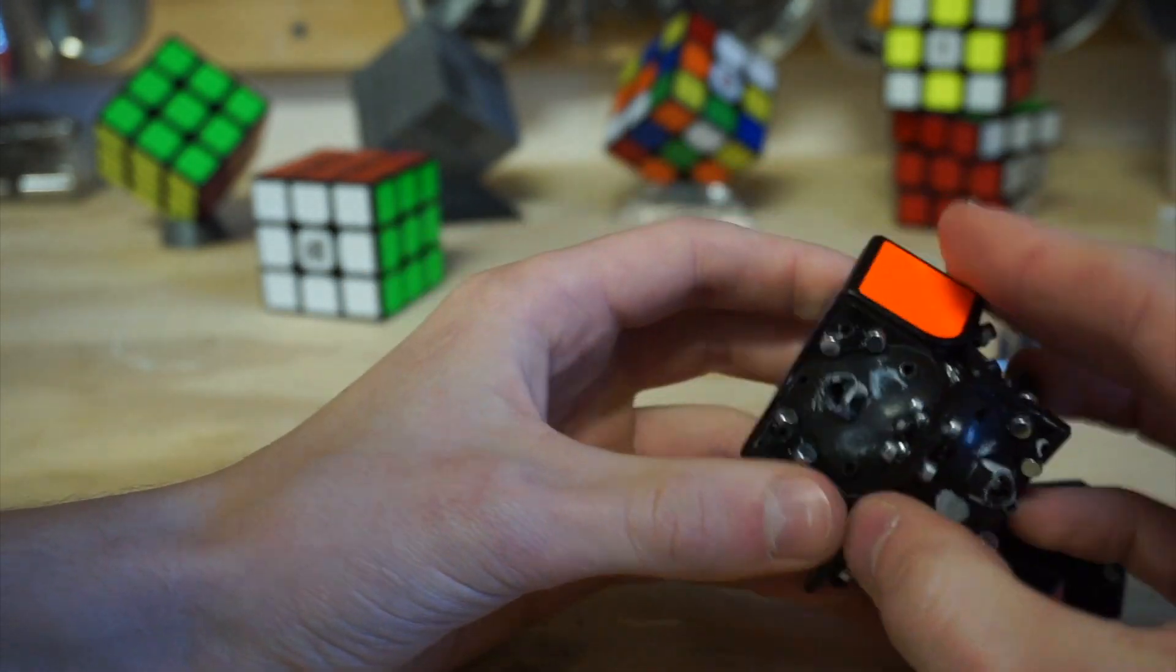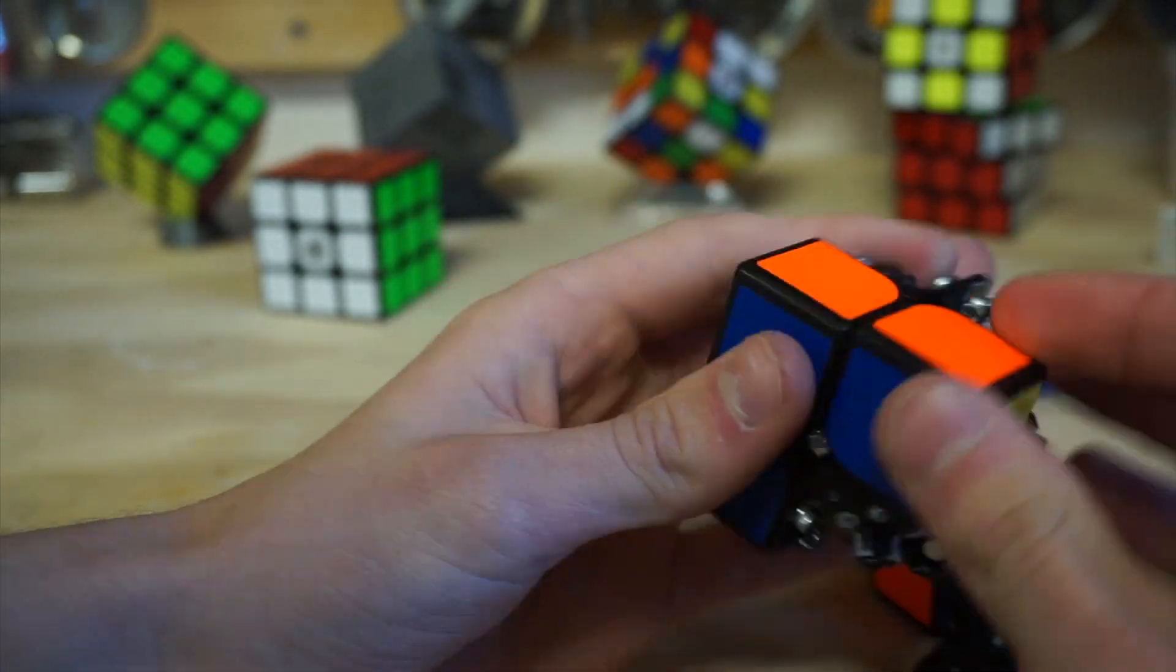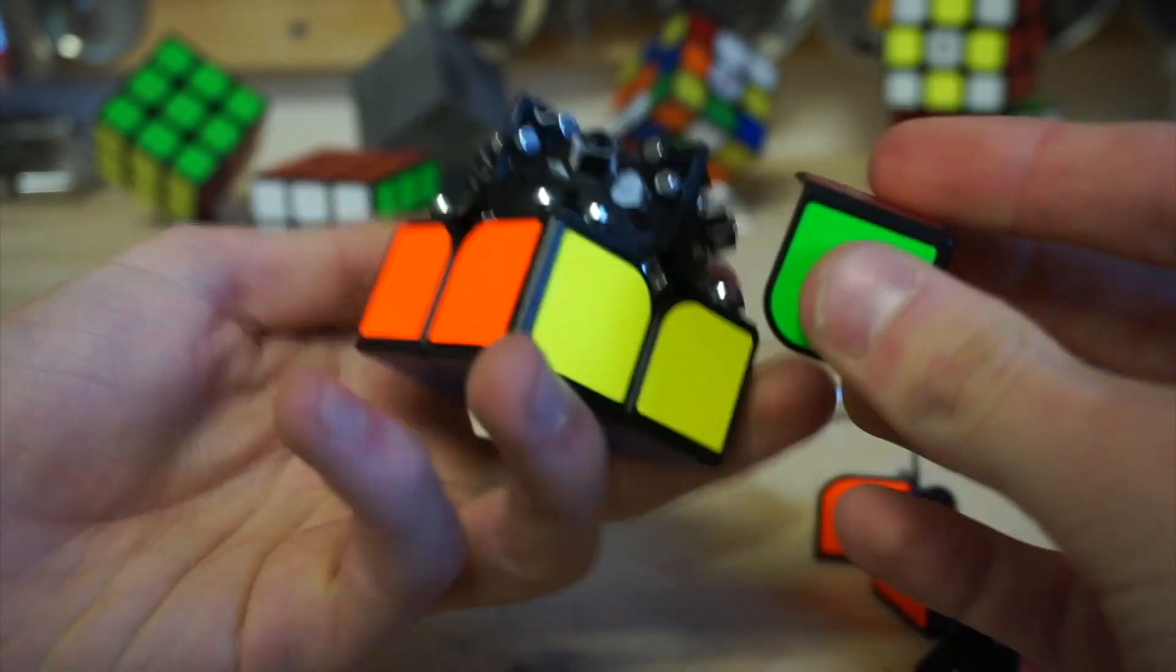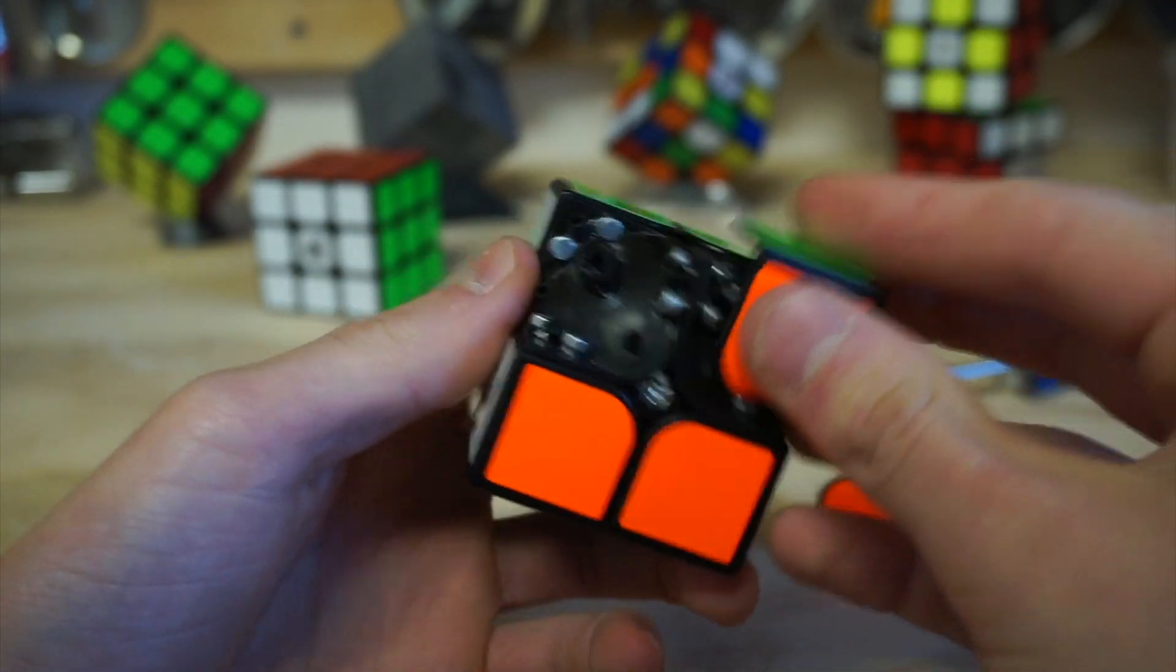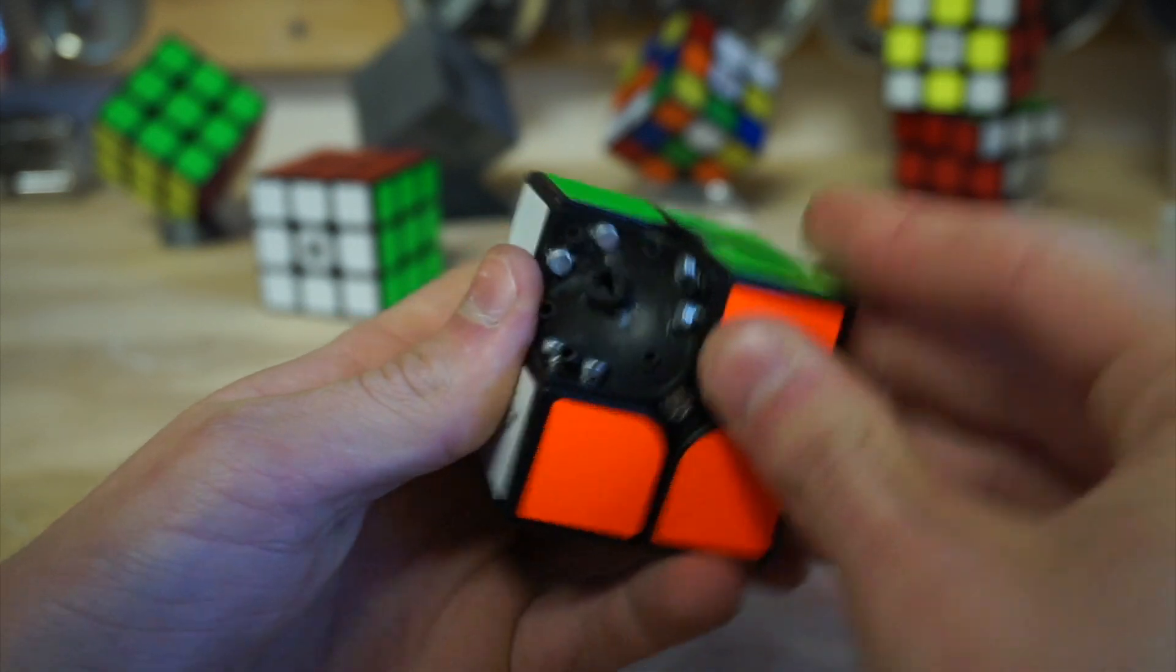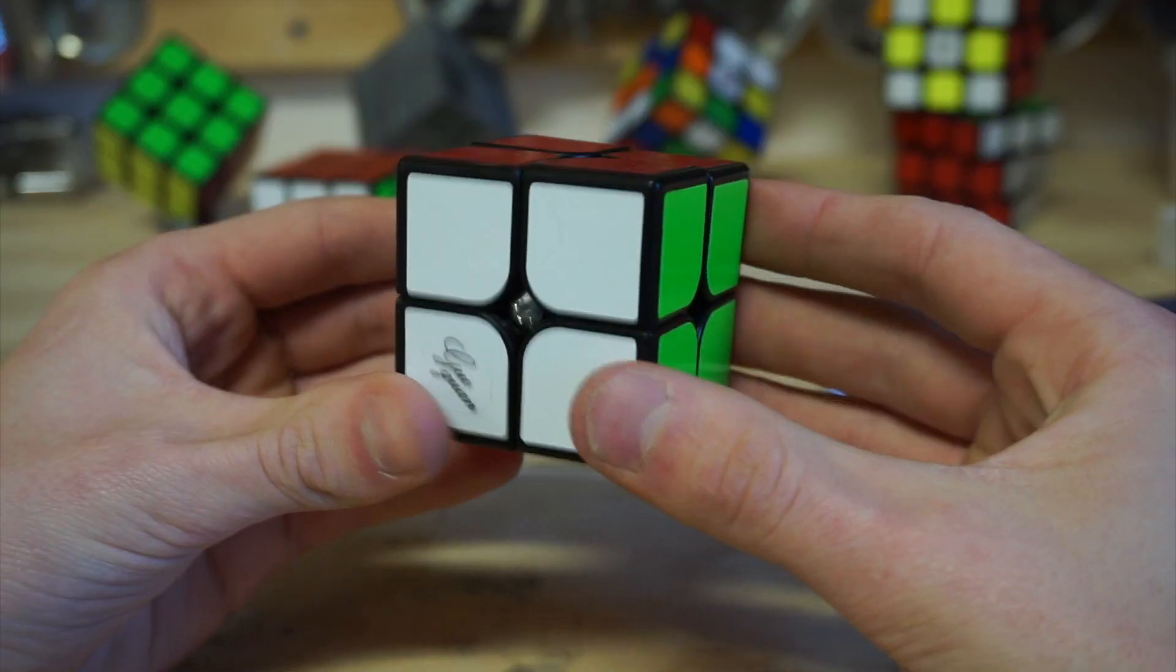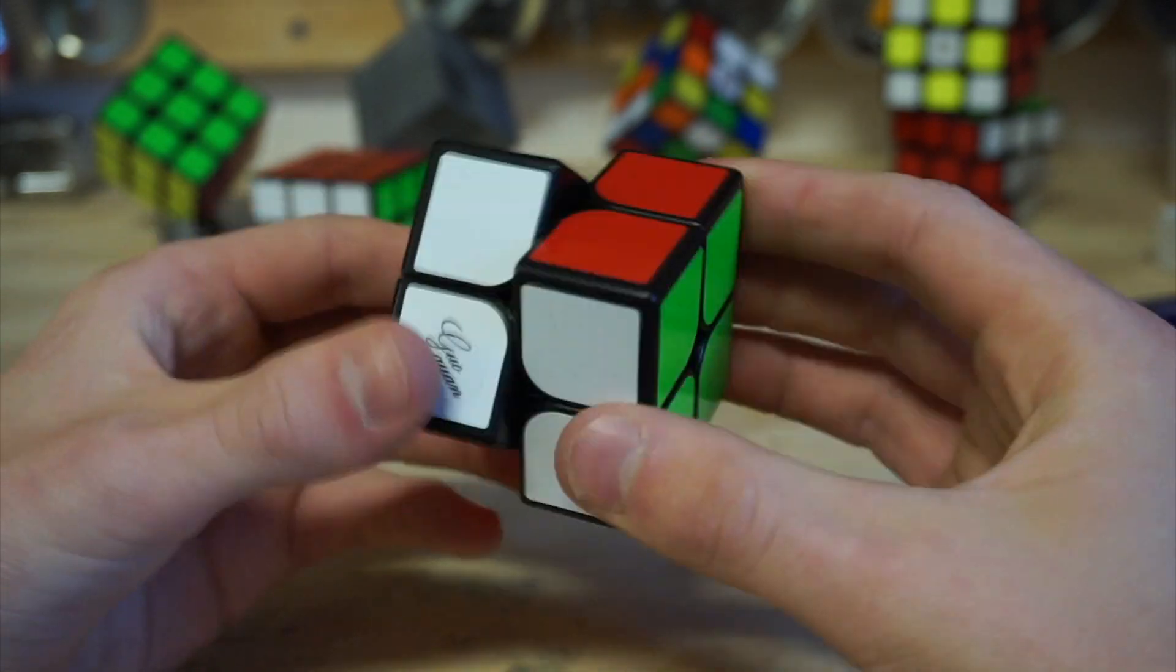If you do this mod, I would advise that you use weaker magnets because the N50 magnets made the cube really strong and it's nice but your hands get a little bit tired after doing algorithms for a while and it can catch where the magnets repel each other. So I would use either an N35 or an N40 strength.